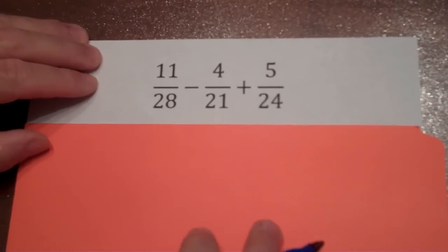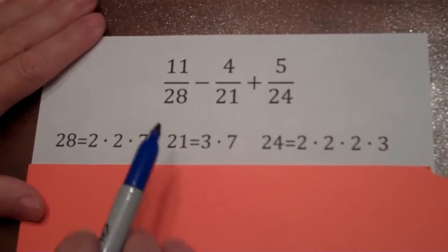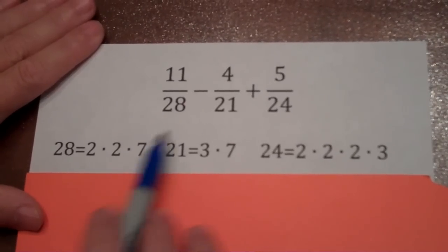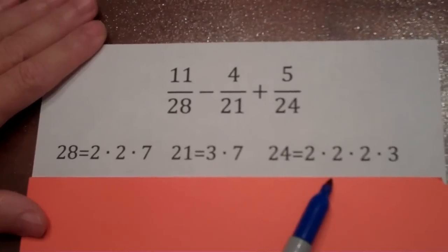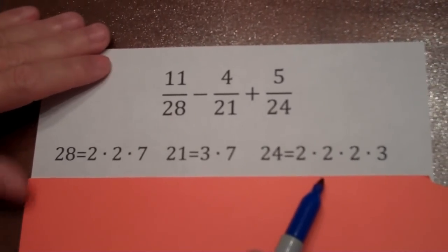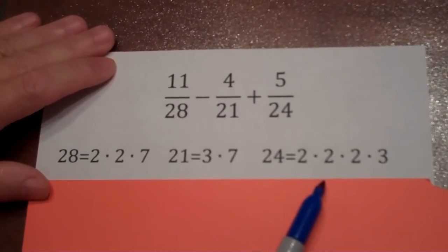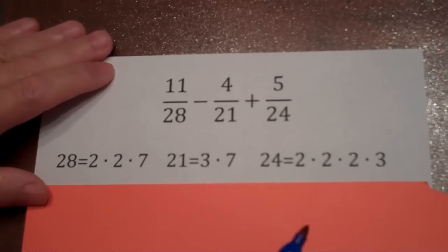So I've gone ahead, worked ahead, and I've taken the liberty of showing you the factors of 28, the factors of 21, and the factors of 24. And now the key will be to come up with a common denominator that has just the right number of factors without any extra.